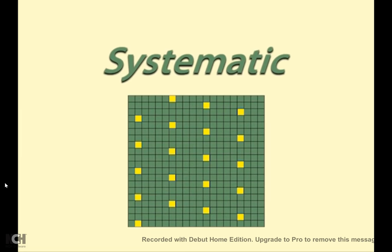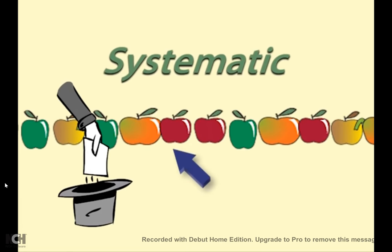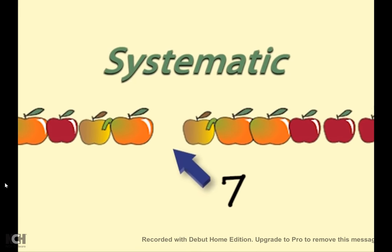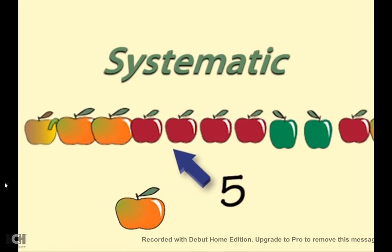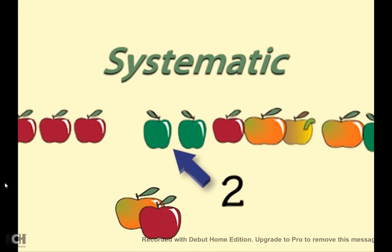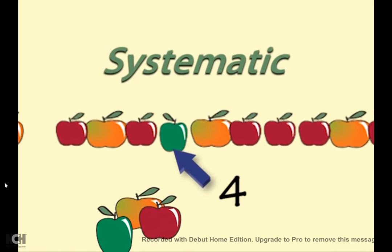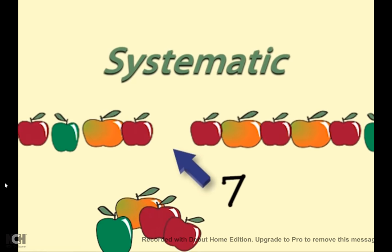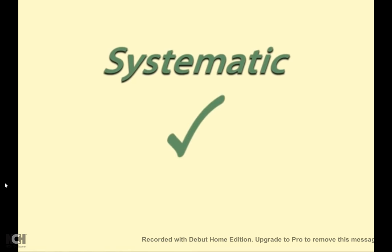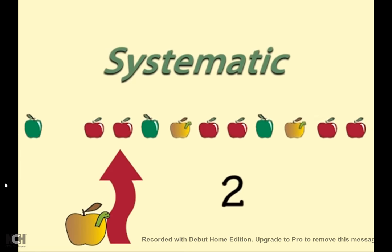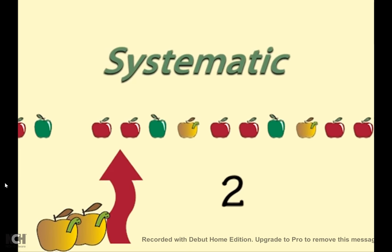With systematic sampling, you choose a starting point at random and then systematically take objects at a certain number apart. For example, if there are 1,000 in the population and you want a sample of 50, you would take every 20th object. Systematic samples are easier to administer than simple random samples and are usually a good approximation. However, if there is a pattern in the population, certain types of objects could be chosen more or less often than others.